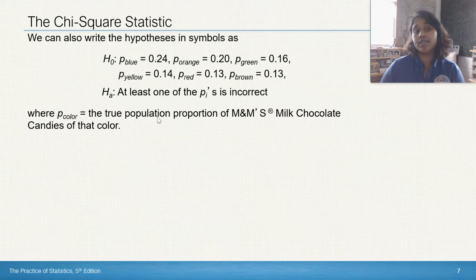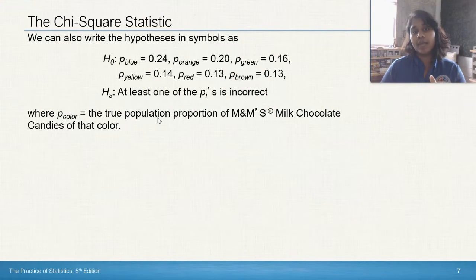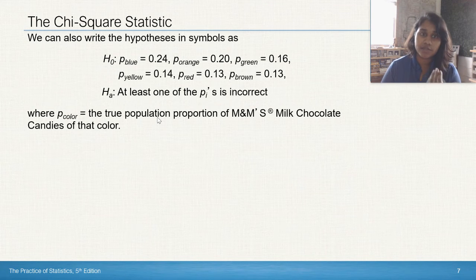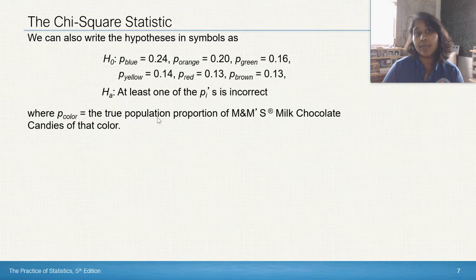If we actually write out for our example, our null hypothesis would be that these are the distributions of those colors, 24%, 20%, 16%, 14%, 13%, 13%, and then the alternate is that at least one of the percent values for these colors is incorrect.